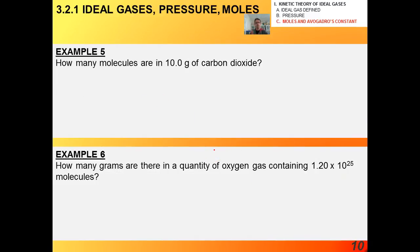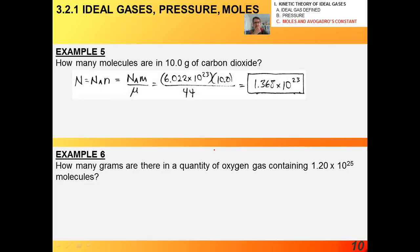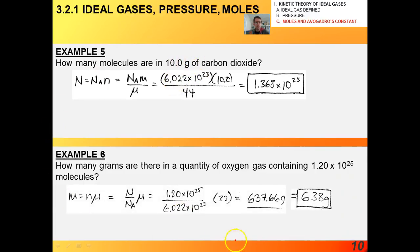Okay, a couple more examples. How many molecules are in 10 grams of carbon dioxide? How would you do that one? Try that one, and then try example 6. Okay, so for example 5, you can use these equations if you want. You can use the simple bridge method. It doesn't matter to me, as long as it makes sense to you. For this one, I got about 1.4 times 10 to the 23rd molecules in 10 grams of carbon dioxide. And in example 6, I got 638 grams in an amount of oxygen containing that many molecules.